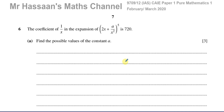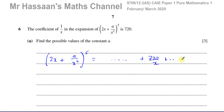This question is about binomial expansion. We have this bracket which is (2x + a/x²) to the power of 5. They've told us that when you expand this, the coefficient of 1/x is 720. So one of the terms will be 720 over x, or 720 times x to the power of minus 1. We have to find the possible values of the constant a.